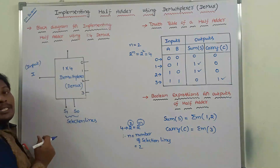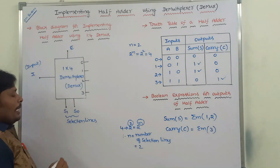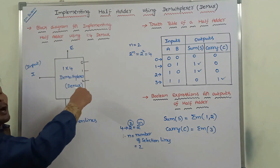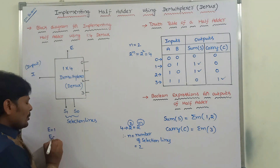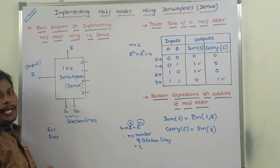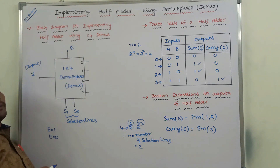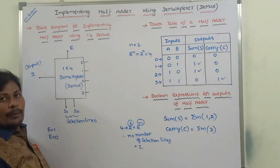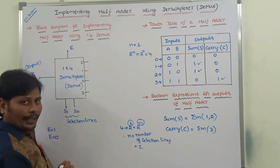This entire operation is performed when the enable input E is equal to 1. When E equals 1, the demultiplexer performs its operation correctly. If E equals 0, the demultiplexer does not perform its operation. Hence, this enable input can also be called the control input, and by using it, the demultiplexer can perform its operation.